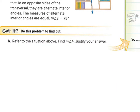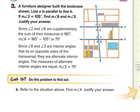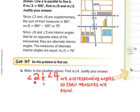Refer to the situation above — find measure of angle four and justify your answer. We know measure of angle two is 105 degrees, and angle four is the corresponding angle to angle two. You can take this line and place it right here and it would fit like a Lego piece. Angle two and angle four are corresponding angles, so their measures are equal — measure of angle four is also 105 degrees.